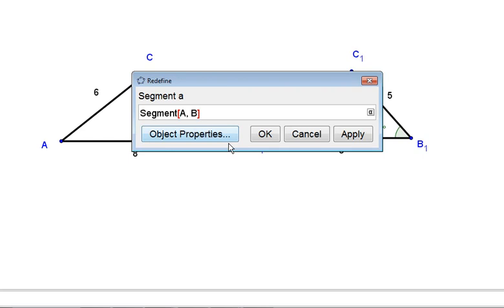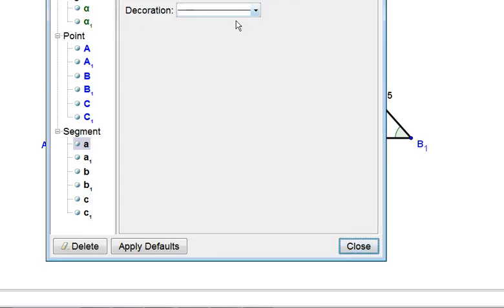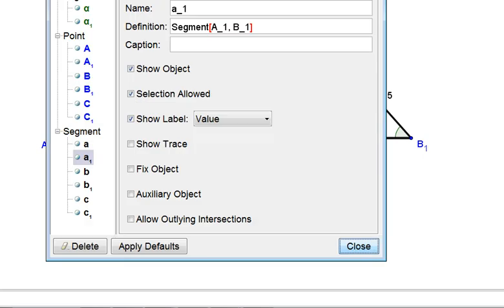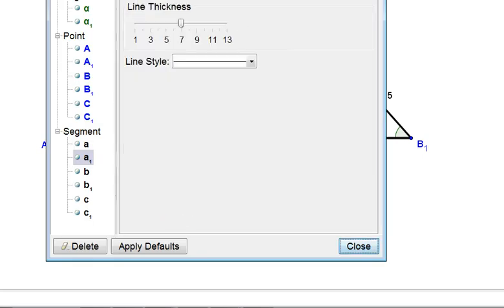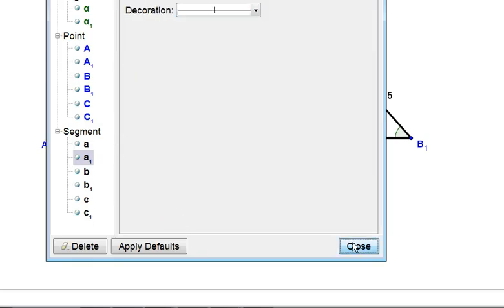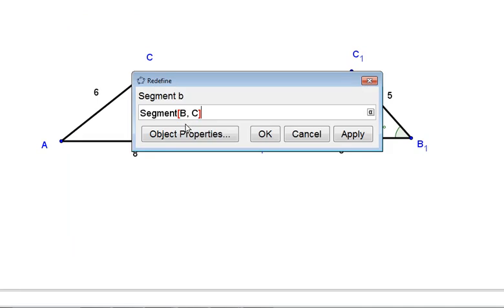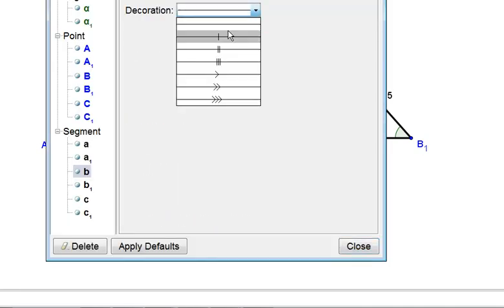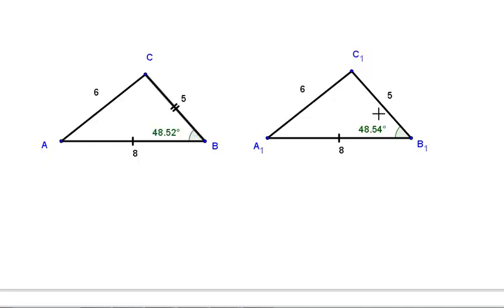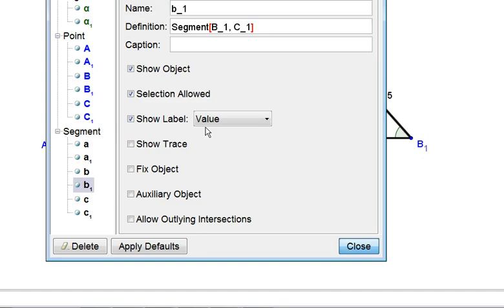Well, let's keep side AB at 8 and side A1B1 at 8, making those two sides congruent. We're then going to keep CB at 5, and C1B1 at 5, making those two sides congruent.